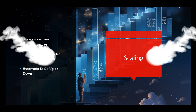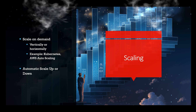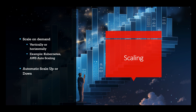Design your architecture to scale horizontally and vertically based on demand. Scale horizontally by adding more servers or containers to handle increased traffic, while vertical scaling involves increasing the resources — such as CPU or RAM — of existing servers. Technologies like Kubernetes or AWS Auto Scaling can automate the process of adding or removing resources as needed.